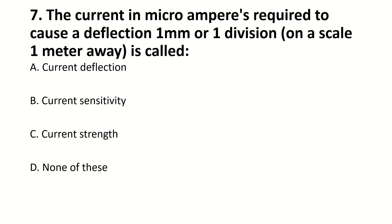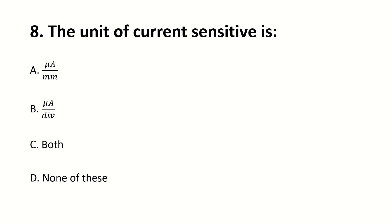The current in microampere required to produce a deflection of 1 mm on a scale 1 meter away is called — blank. Right answer is B: current sensitivity. The unit of current sensitivity is — blank. Right answer: both.